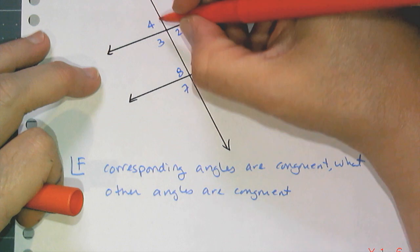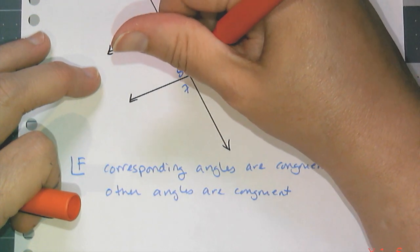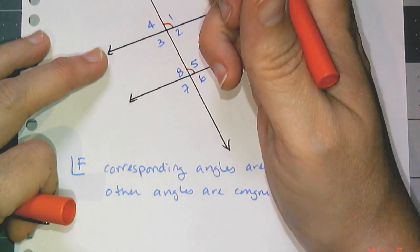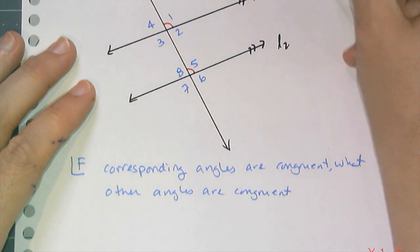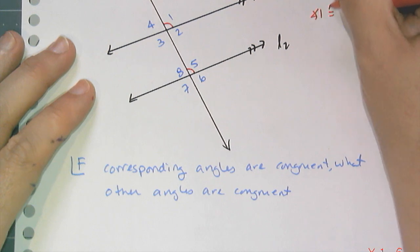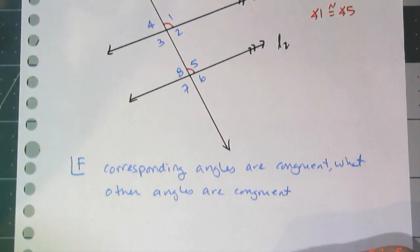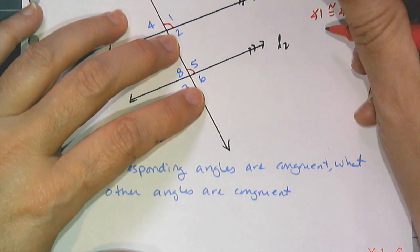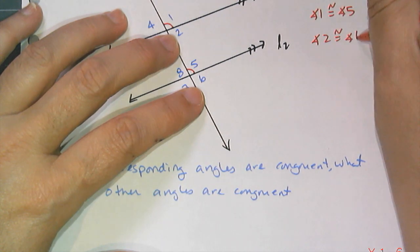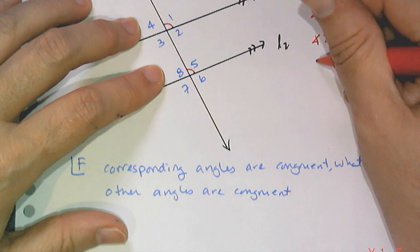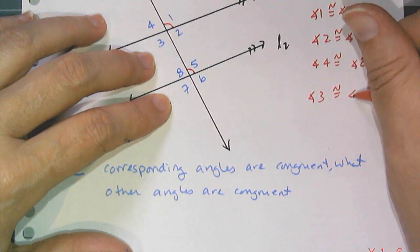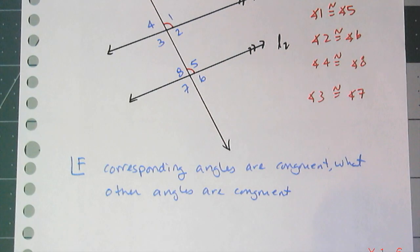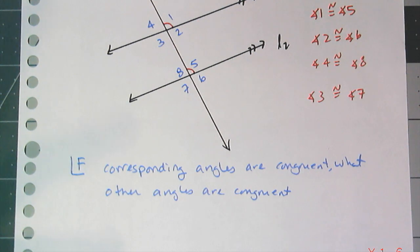For corresponding angles, starting with angle 1 and angle 5 — they are both to the right of the transversal and above their respective parallel lines. I'll abbreviate corresponding angles as CA: angle 1 is congruent to angle 5. Going through the whole list: angle 2 is congruent to angle 6, angles 4 and 8 are also congruent, and angles 3 and 7 are also congruent. Now, if corresponding angles are indeed congruent, I want to think about what other types of angles are congruent in this picture, using logic and my previous conjecture — the vertical angle conjecture (C2).